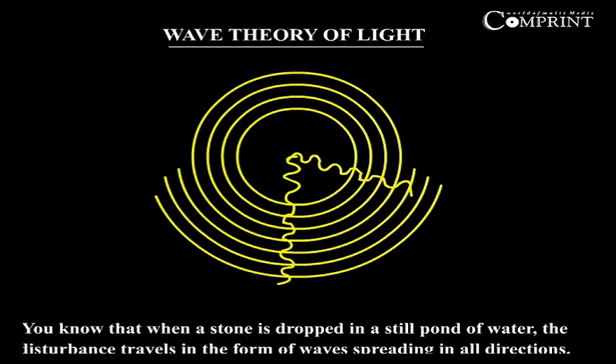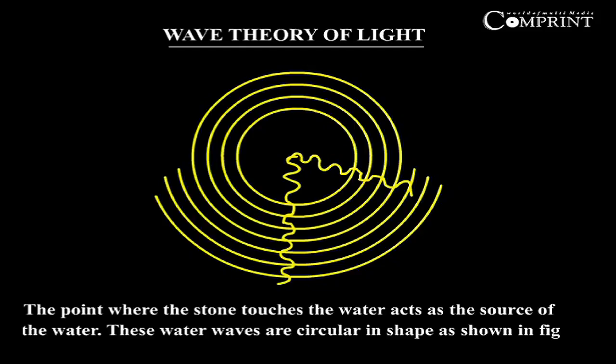Wave theory of light. When a stone is dropped in a still pond of water, the disturbance travels in the form of waves spreading in all directions. The point where the stone touches the water acts as the source of water waves.